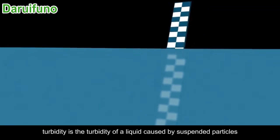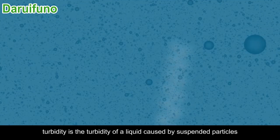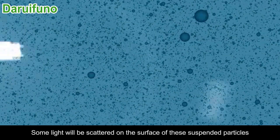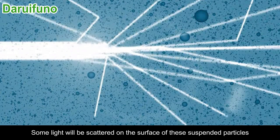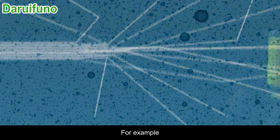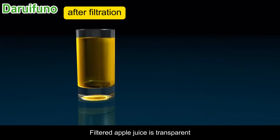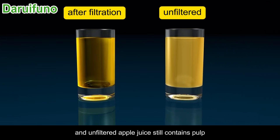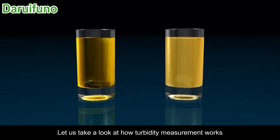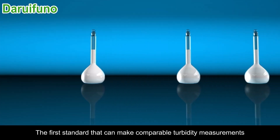Turbidity is the turbidity of a liquid caused by suspended particles. Some light will be scattered on the surface of these suspended particles, resulting in reduced transparency of the liquid. For example, filtered apple juice is transparent, and unfiltered apple juice still contains pulp, so it looks turbid. Let us take a look at how turbidity measurement works.